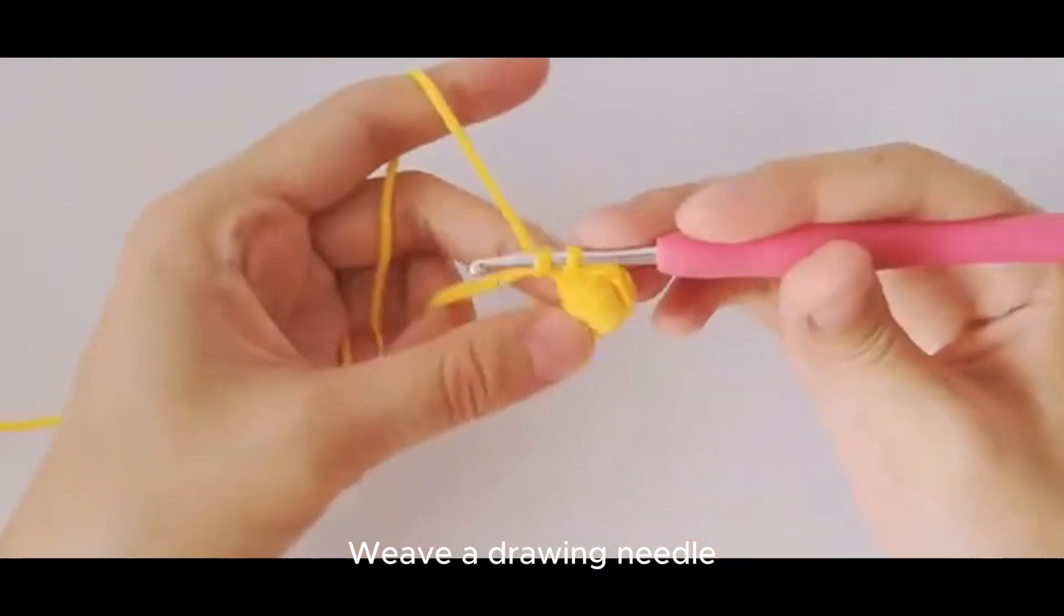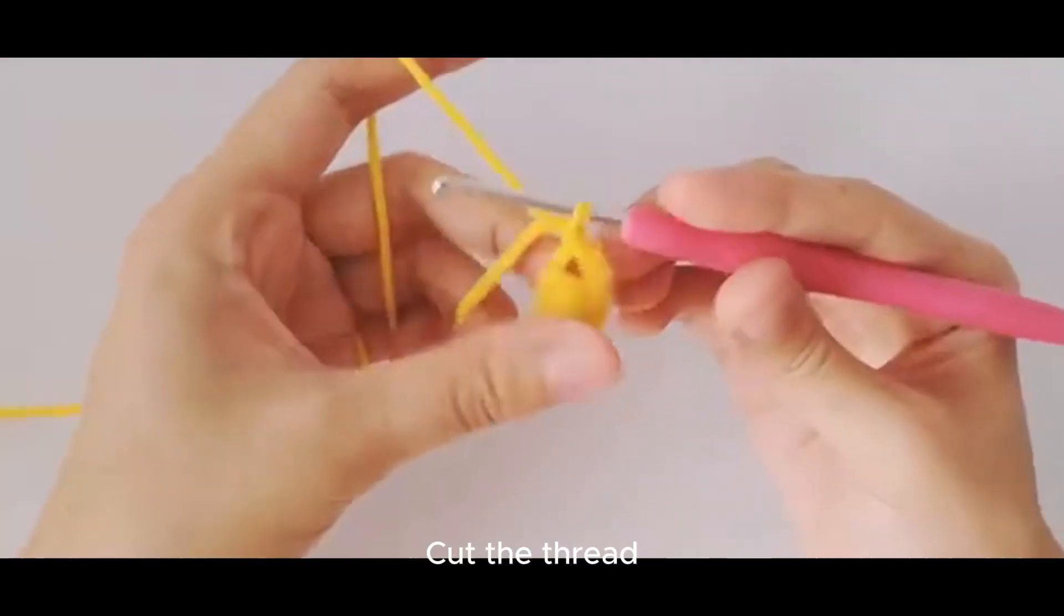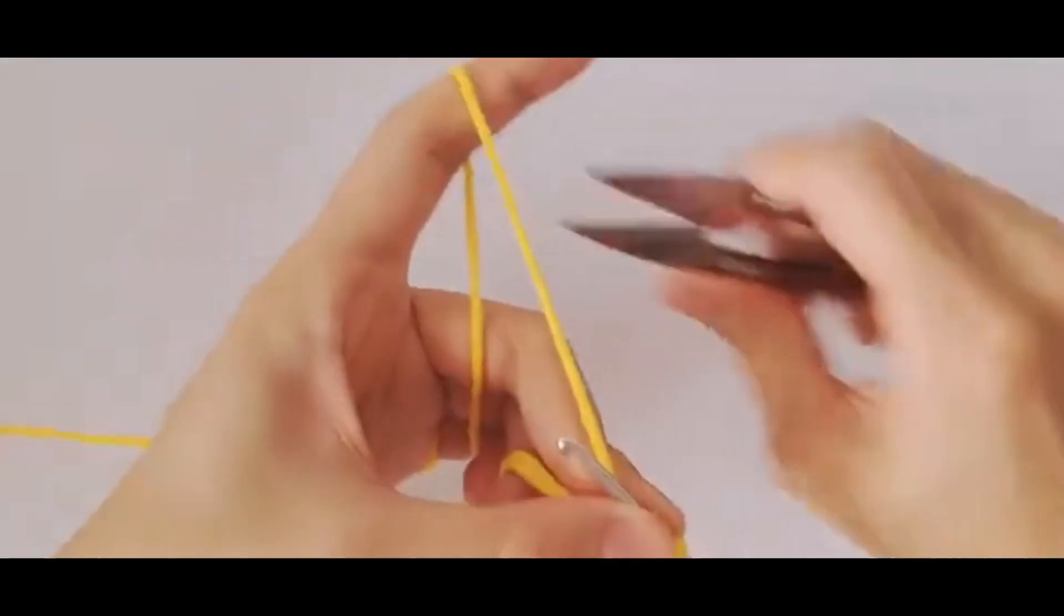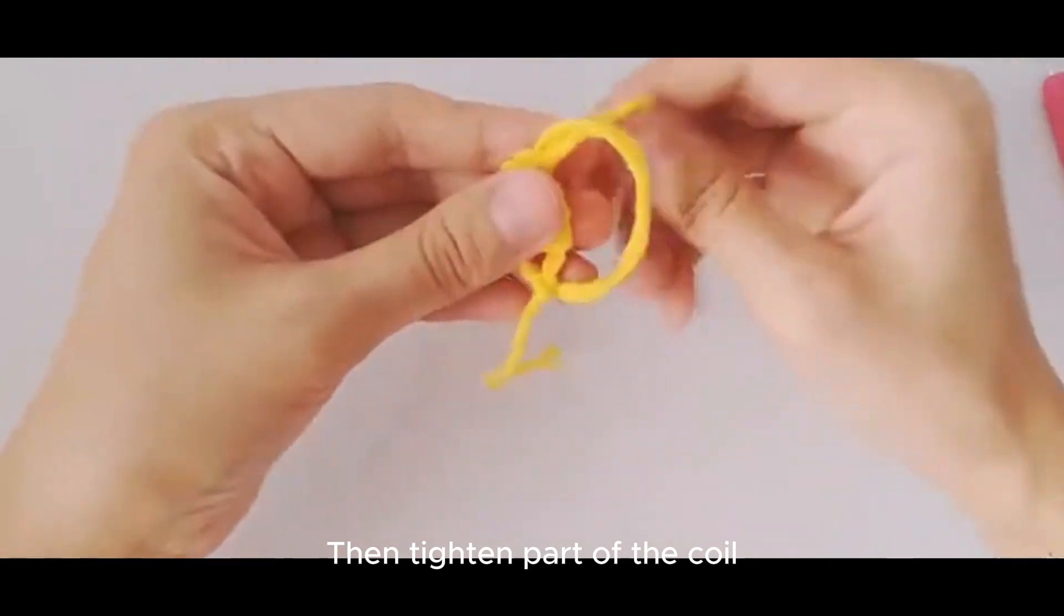With a draw needle, cut the thread. Then tighten part of the coil.